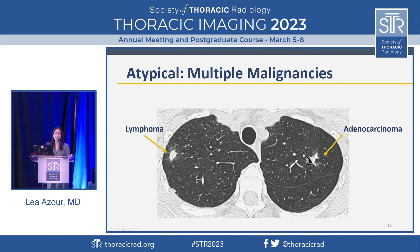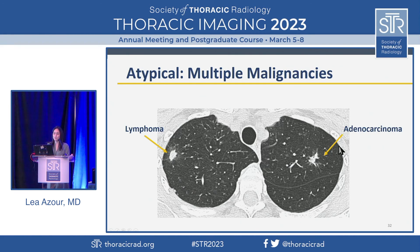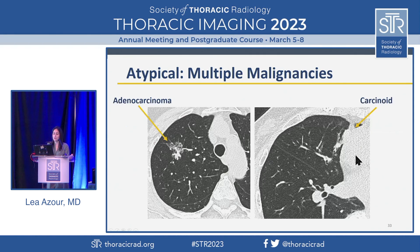Multiple malignancies. It's nice when we have a unifying process, but sometimes patients can have multiple things going on. Lymphomas can also have ground glass, as can different metastases like melanomas, pancreatic-biliary, and mucinous cancers. This patient had multiple malignancies and came to us with multiple biopsies at various times. Another patient had two images from the right upper lobe and right middle lobe — she also had multiple malignancies.